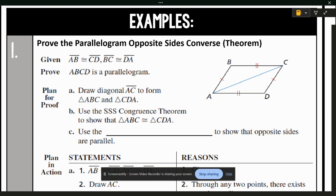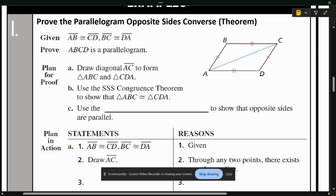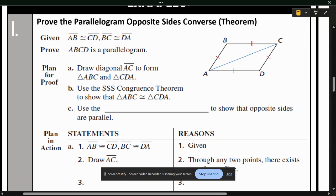The first thing that we want to do is draw a diagonal AC to form triangle ABC and triangle CDA. Next, it says use side, side, side congruence theorem to show that triangle ABC is congruent to triangle CDA. And then last, we're going to use alternate interior angles to show opposite sides are parallel. These are all things that are put into the proof. So essentially, I've just given you and read out the steps in order to prove, but I want to show you how the statements and reasons go.